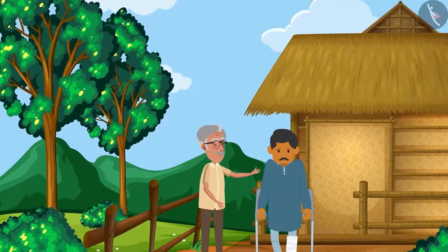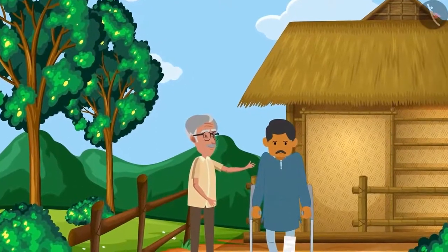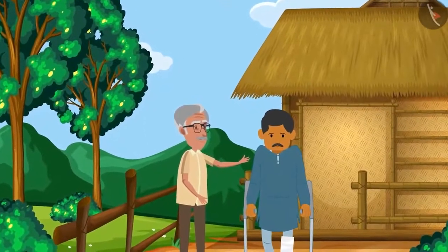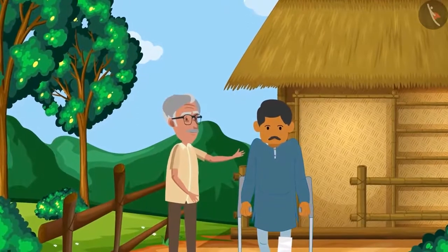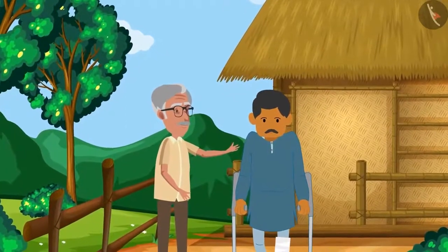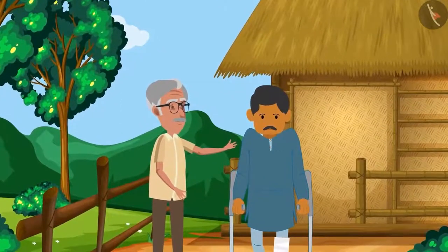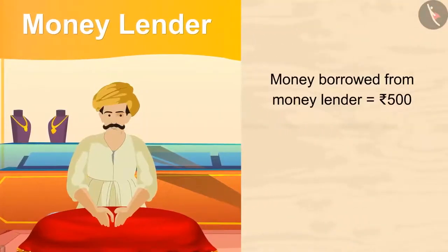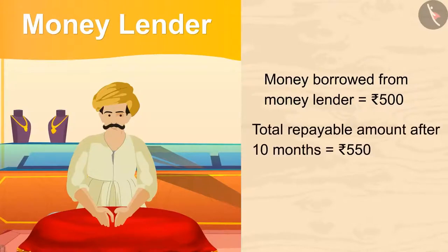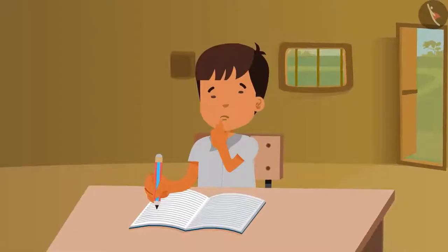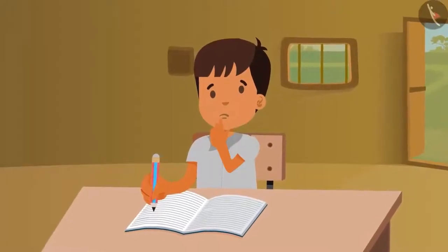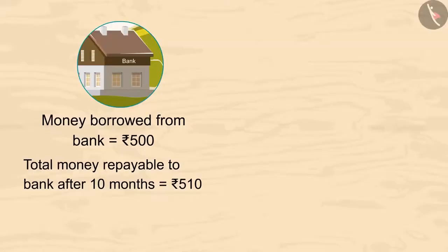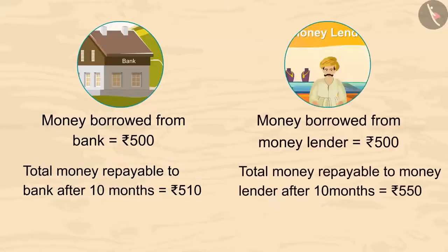Before taking money from the bank, one of the neighbours, Ghansham, suggested Vimal's father to borrow money from Pushkar, the money lender. He said if Vimal borrows 500 from Pushkar, then at the end of 10 months he would have to return only 550 rupees to him. Kids, now you tell — which was the best suggestion for borrowing money? Bank or money lender?